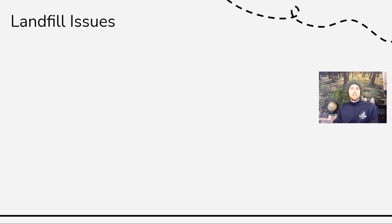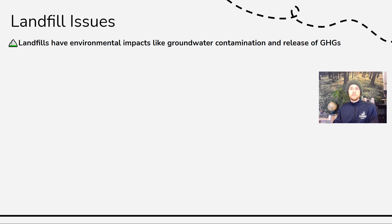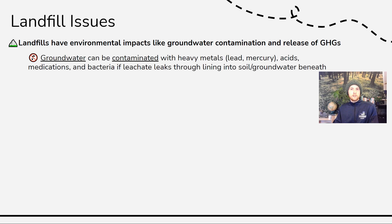Now let's look at some issues arising from landfill placement and use. The first two big environmental consequences are groundwater contamination and the release of greenhouse gases. Groundwater — aquifers or water that exists in soil layers beneath the surface — can be contaminated with leachate from landfills. This leachate could contain heavy metals like lead, mercury, or acids from batteries, medications, or bacteria, and all of these can be carried out of landfills if there is a leak or hole in the plastic or clay liner.